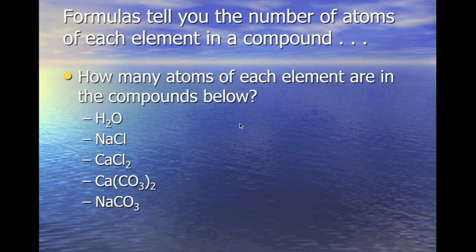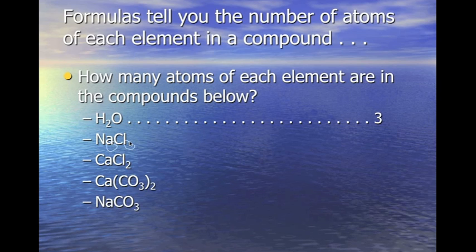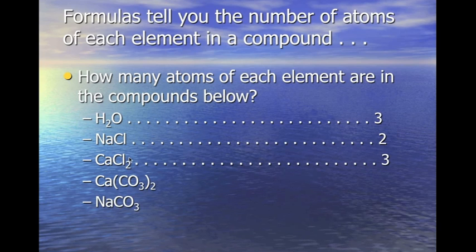How many atoms of each element are in the compounds below? Water has two hydrogens plus one oxygen — three atoms total. NaCl has no subscripts on either element, so they're both understood as 1: one sodium, one chlorine — two atoms in the compound. Calcium and chlorine: no subscript on calcium, so it's understood as 1. One calcium plus two chlorine gives us three atoms.